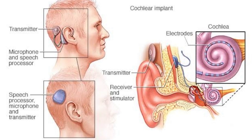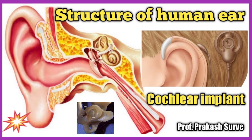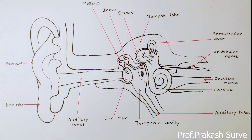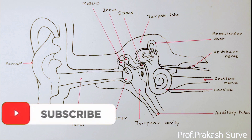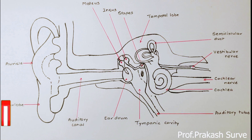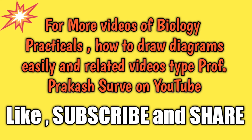In this video we have discussed the structure of the human ear as well as the cochlear implant. I have also made a video on how to draw the human ear diagram easily step by step. Links to various diagram videos and biology-related videos are shared here. Kindly share with your friends. Thank you.